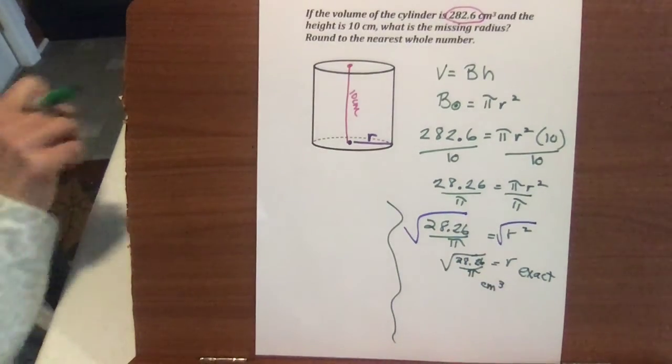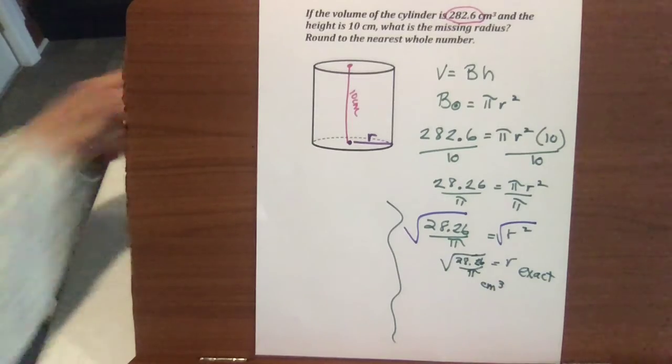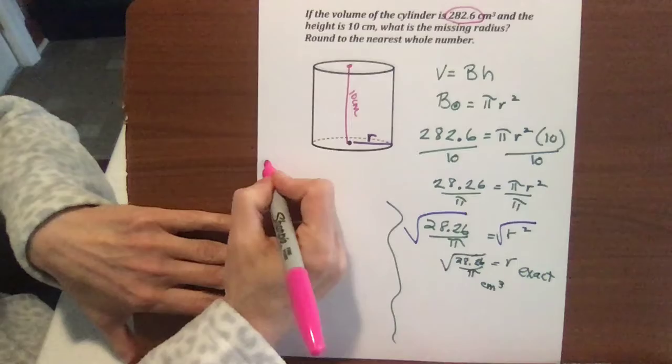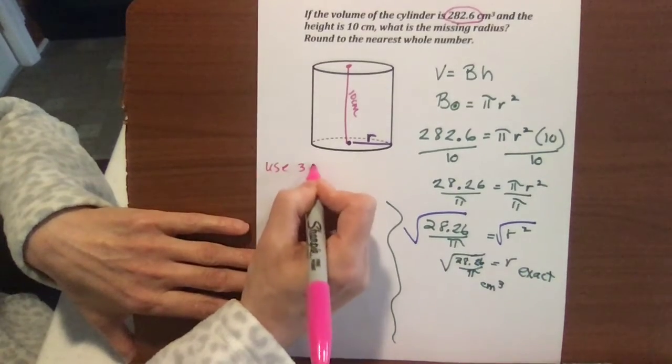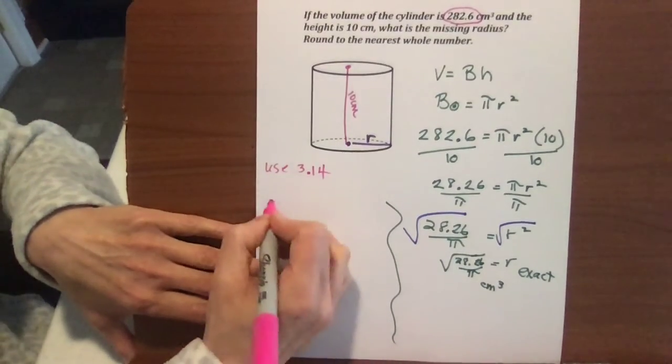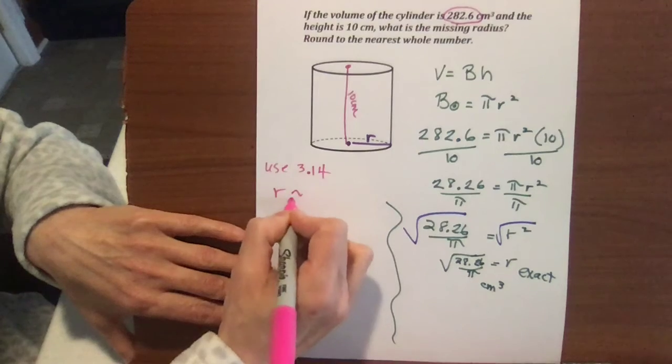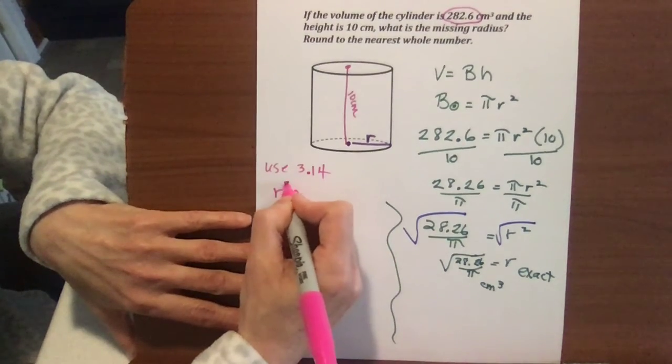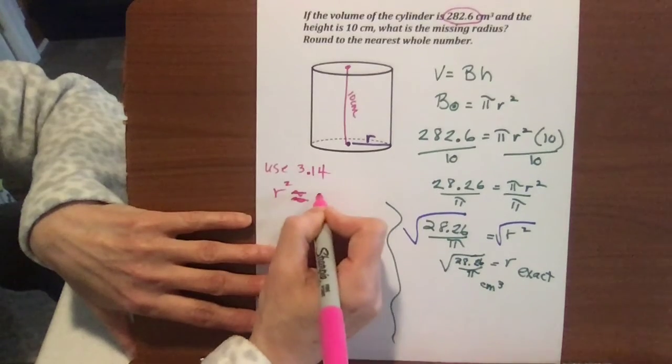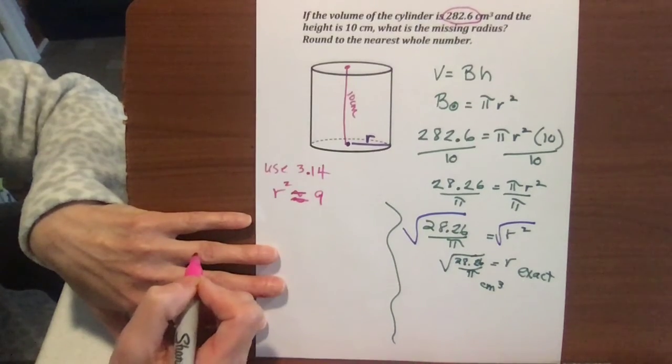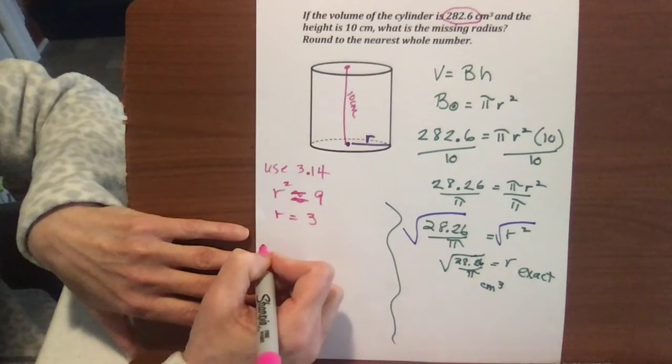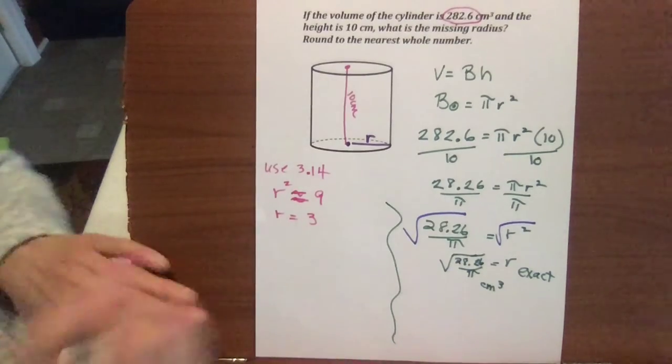But then if you're going to use 3.14, as a lot of online tools use, so if you use 3.14 for pi, then r is going to be approximately equal to, r squared actually is going to be exactly equal to 9 when you divide by 3.14, and r will equal 3 when we take the square root. So that's one thing.